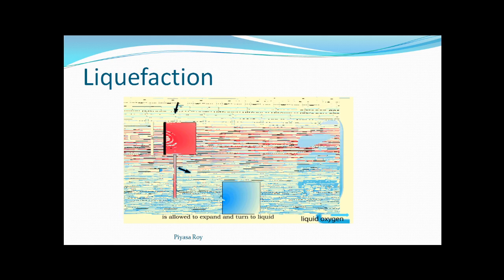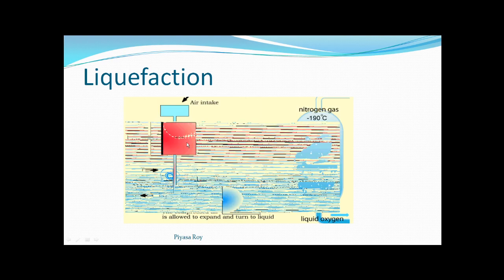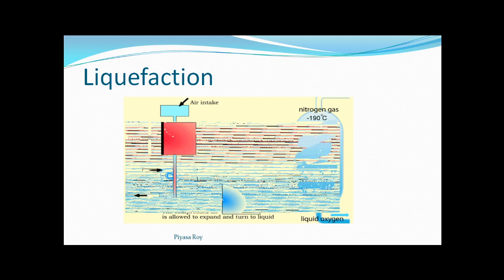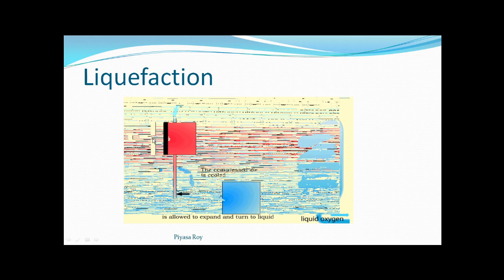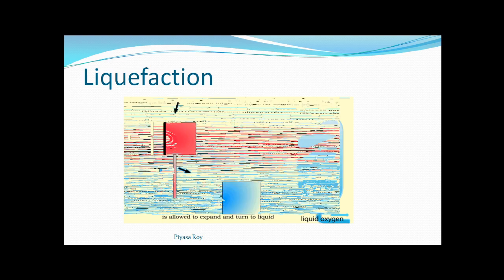The other gas which cannot be liquefied easily will be left behind. If we compare carbon dioxide and nitrogen, then carbon dioxide is more easily liquefied than nitrogen. So if we take the mixture of carbon dioxide and nitrogen, and apply pressure and lower the temperature, carbon dioxide will become liquid and can be separated, while the other gas remains in gaseous form. In this manner, we can easily separate the two gases.